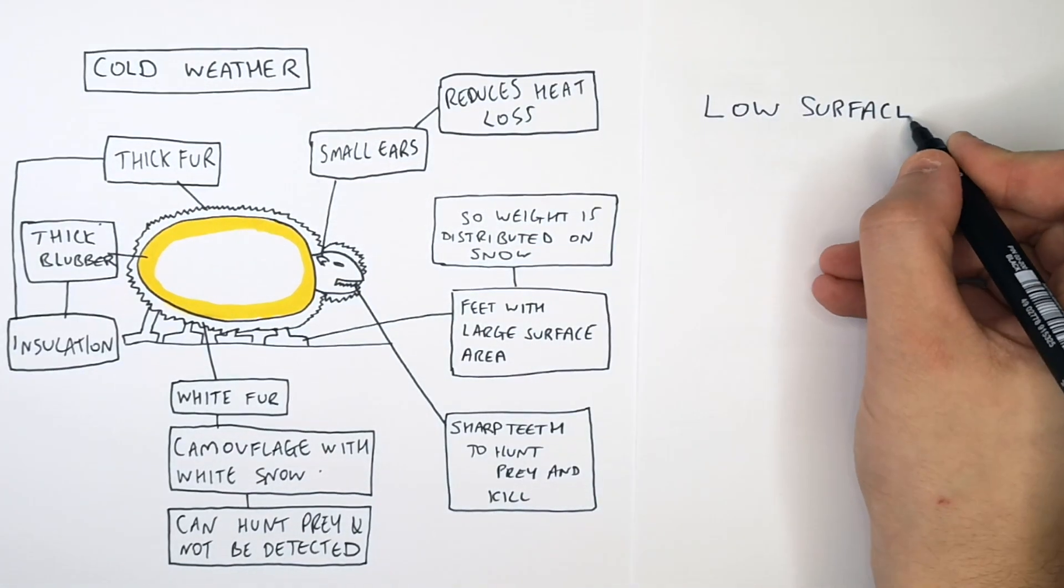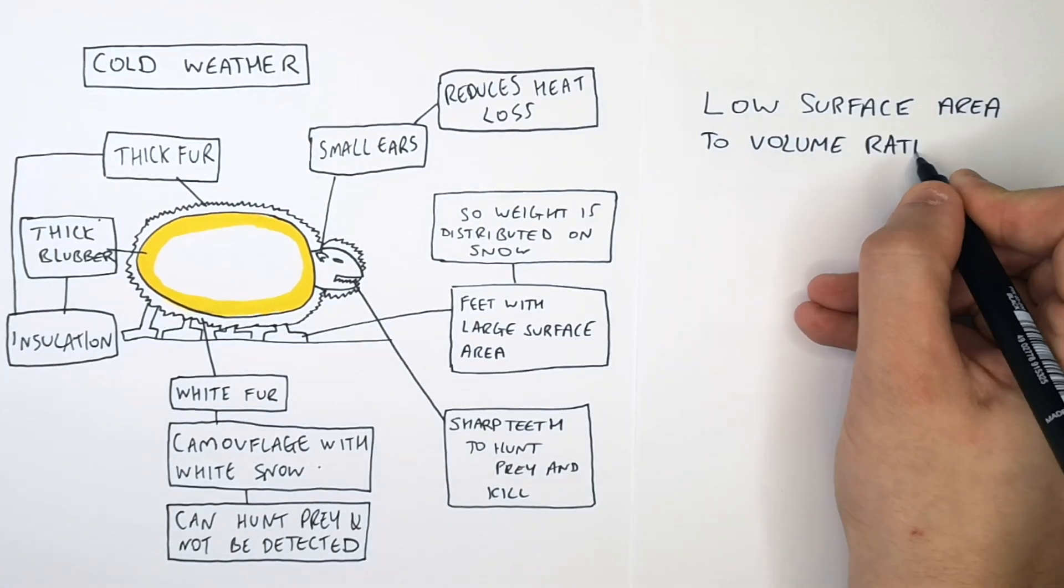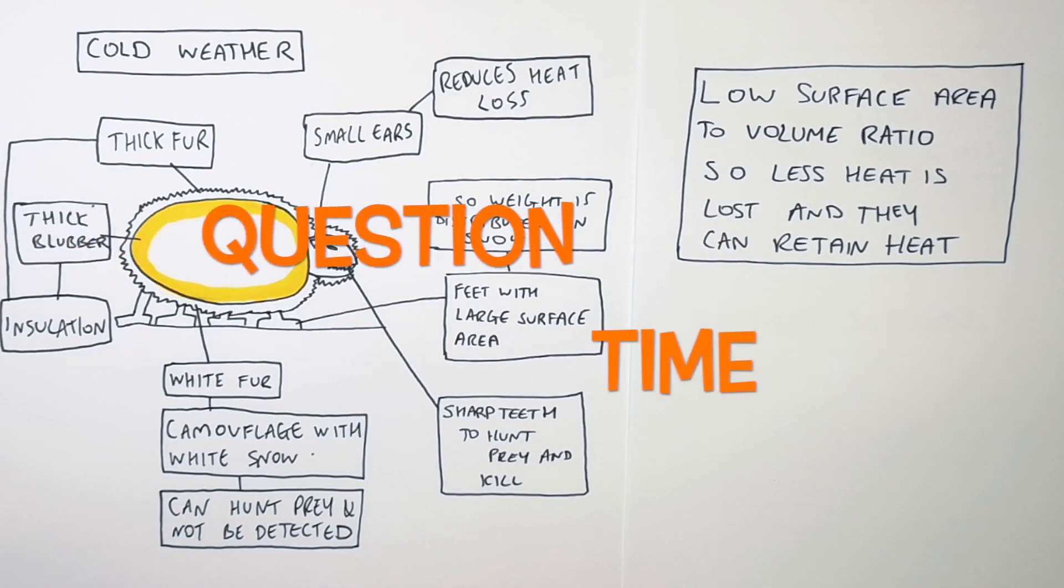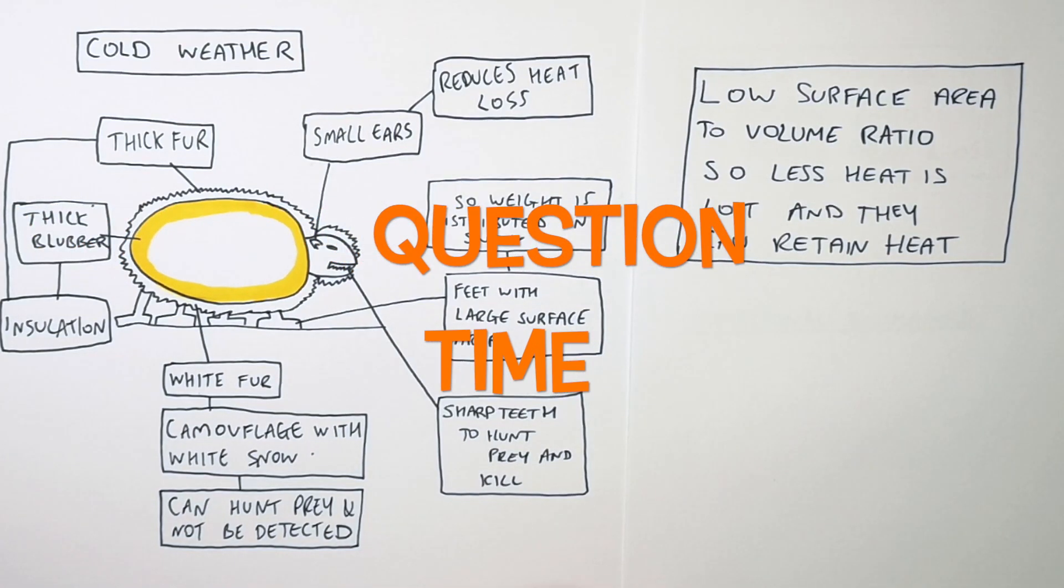So remember, polar bears have a low surface area to volume ratio so less heat is lost and they can retain their heat. It's question time. Attempt these questions to check your understanding.